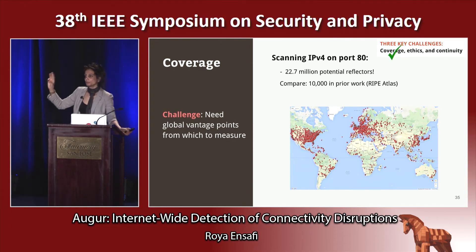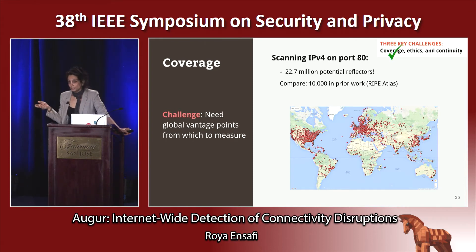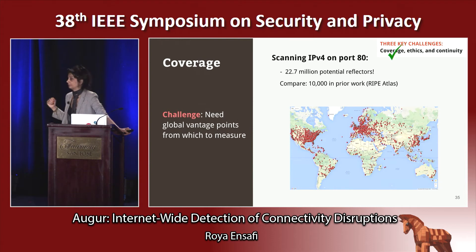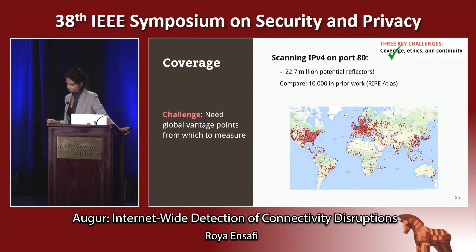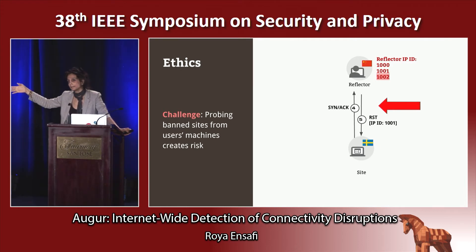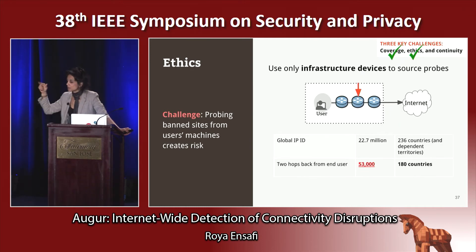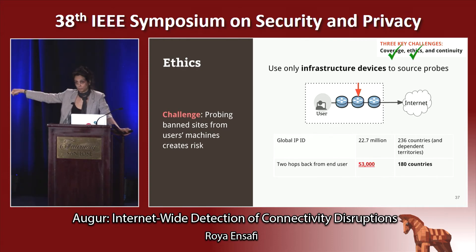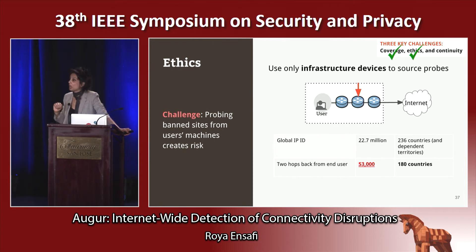I started the talk by saying there are three key challenges: coverage, ethics, and continuity. Augur solves the coverage problem by offering more than 22.7 million potential reflectors — the second best case is less than 10,000 probes by RIPE Atlas. With respect to ethics, Augur creates some traffic from site to reflectors, which may appear as if these two are communicating, and if the site is sensitive, that can cause risk. Augur reduces risk by running measurements from routers a hop back from traceroute endpoints. Even with that constraint, we have more than 53,000 vantage points over 180 countries.